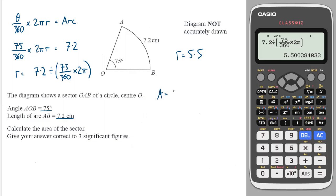So the area is the same fraction multiplied by πr squared this time. So I will do 75 over 360 and I will times that by π and I will times that by the previous answer squared. And I will get 19.8 to 3 significant figures. Perfect.